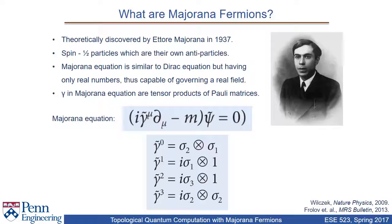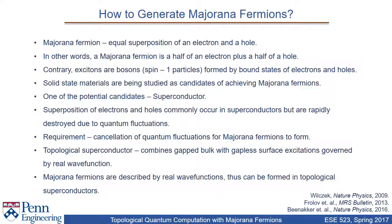The gamma matrices in the Majorana equation, as you can see on the slide, are tensor products of Pauli matrices. Majorana fermions can be thought of as an equal superposition of an electron and a hole. This is unlike excitons, which are bosons formed by bound states of electrons and holes, whereas a Majorana fermion is a half electron and a half hole.